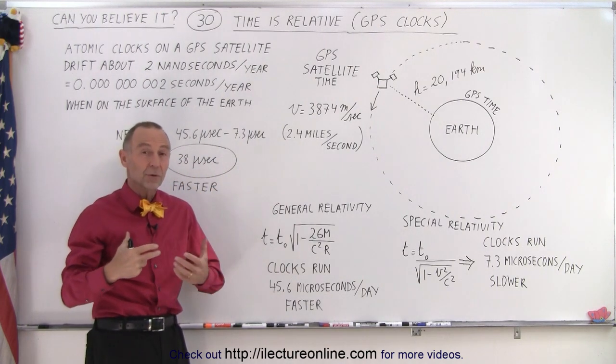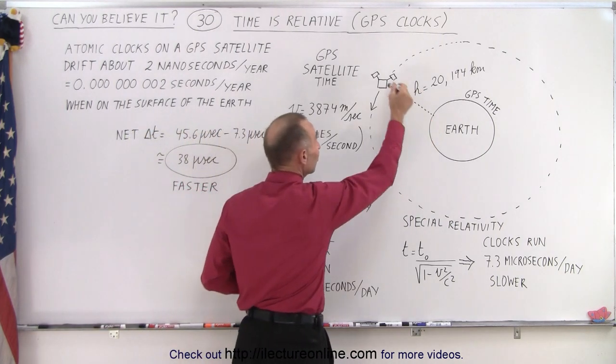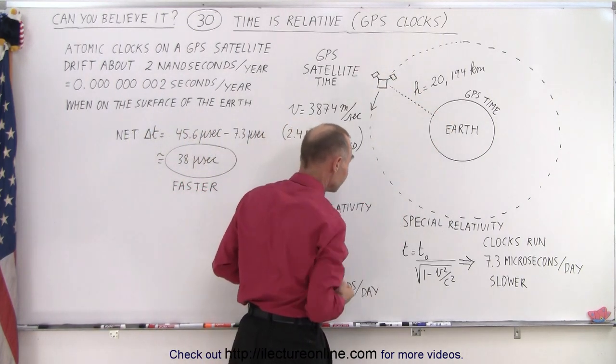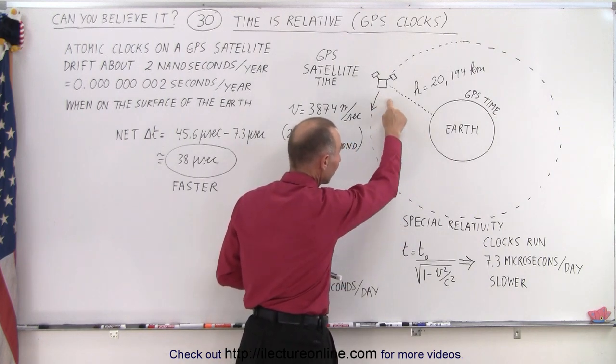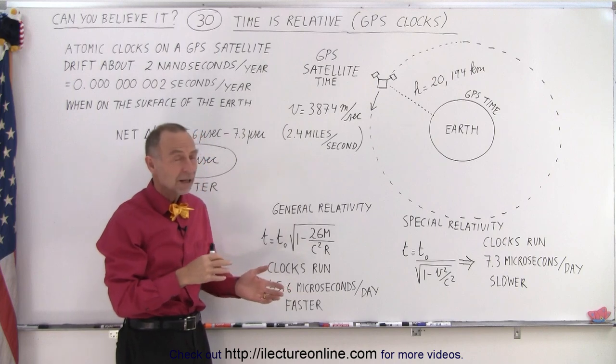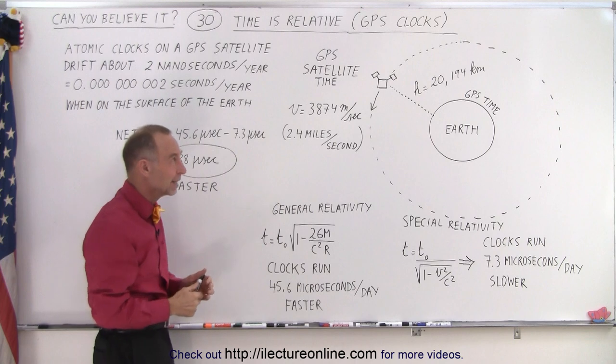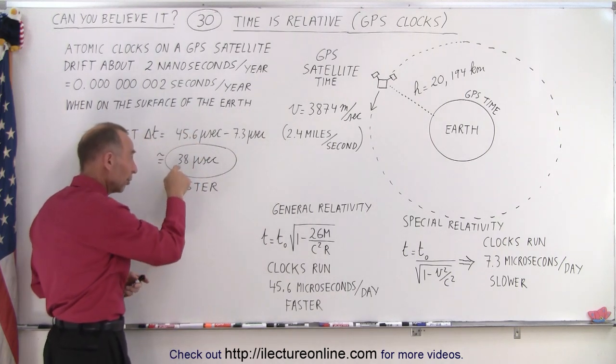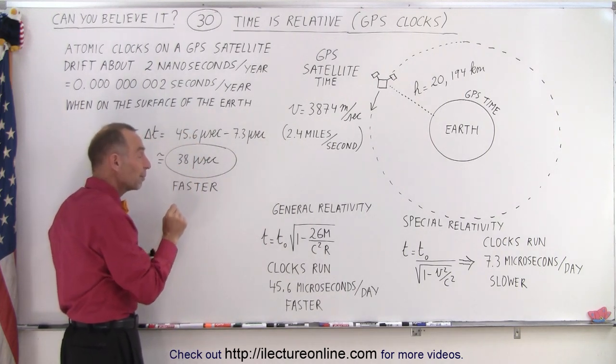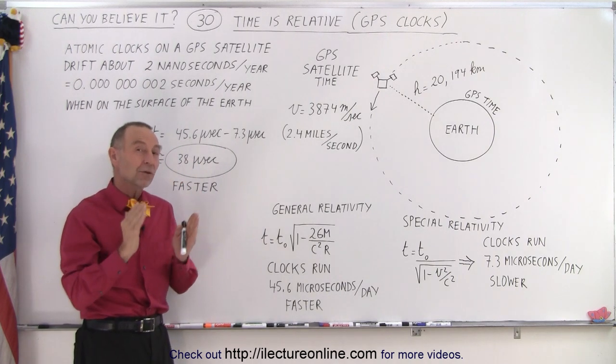Now you say, 38 microseconds? Who would care about 38 microseconds? But when we receive signals from the GPS satellites, and they travel this distance in approximately about 70 milliseconds or so, depending upon where the satellite is at, anywhere from about 60 to about 80 milliseconds,